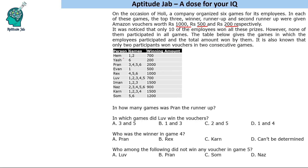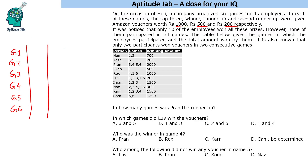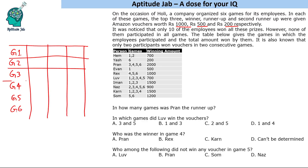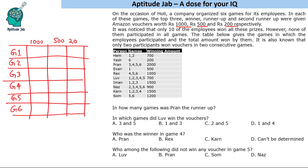The table gives the games in which each person participated and the winning amount. Let us say the games are G1, G2, G3, G4, G5 and G6, and we have the first, second and third winners. The first person gets 1000 rupees, the second person gets 500 and the third person gets 200 rupees.